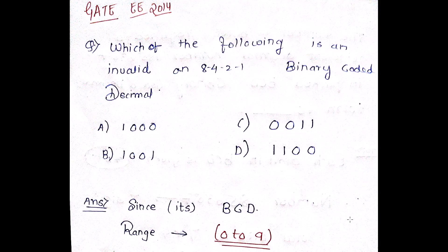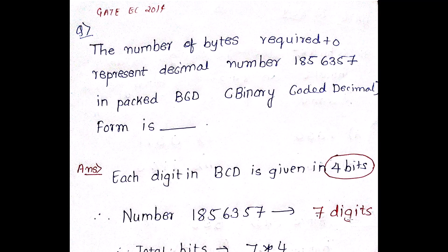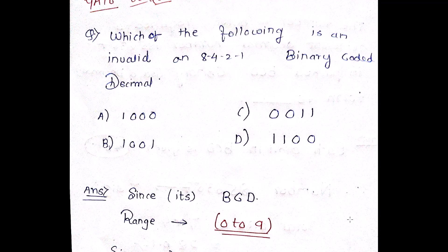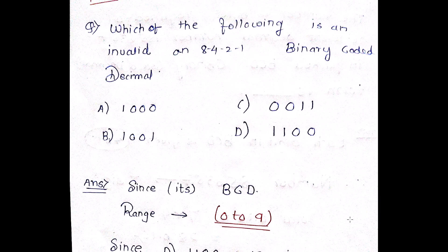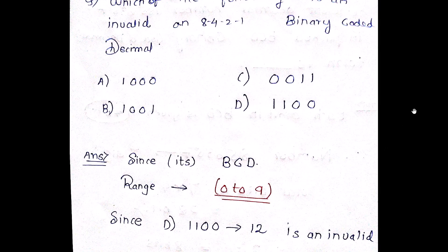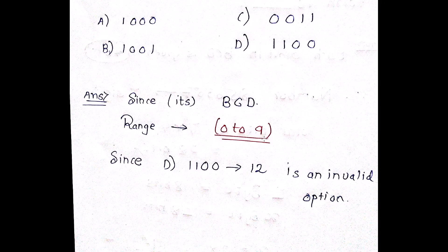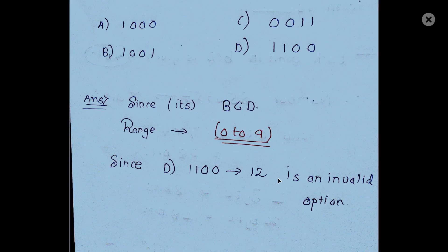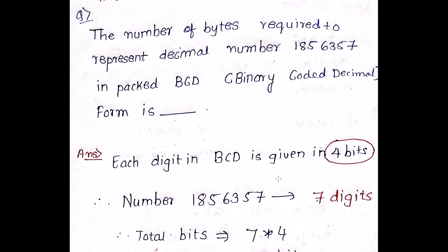Now let's solve two GATE problems — one from Electrical Engineering 2014 and one from Electronics and Communication 2014. The first question asks: which of the following is a valid 8421 Binary Coded Decimal? Since BCD only covers decimals 0 to 9, anything greater than 9 is not a valid BCD. Therefore option D, which represents 12, is an invalid BCD option.